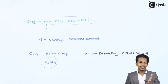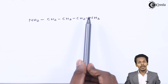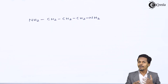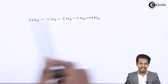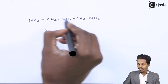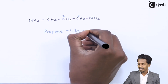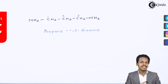Now let's talk about the case where two amine groups are attached to an alkyl group. For example, consider a molecule with three carbon atoms — as an alkane it would be propane. Since there are two amine groups, the letter 'e' is retained and the name becomes propane-diamine. The NH2 groups are attached at carbon number one and carbon number three, so the full IUPAC name is propane-1,3-diamine.